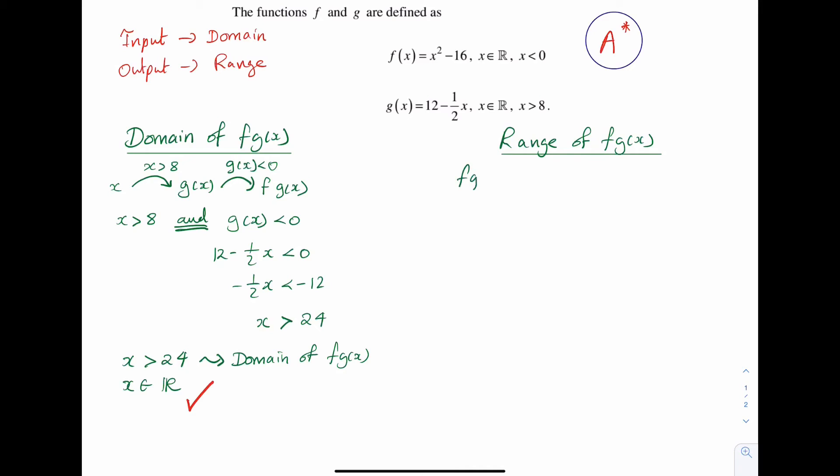fg(x) is the same as writing f in square brackets g(x). g(x) is the input. So I can write f in brackets 12 minus a half x. So if I replace the x in f with 12 minus a half x, I get the following result: 12 minus a half x in brackets squared minus 16.